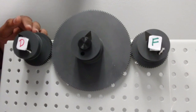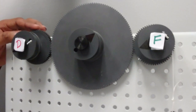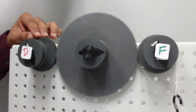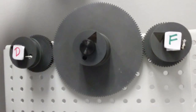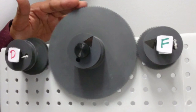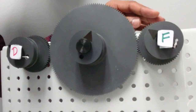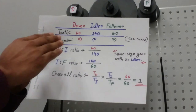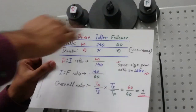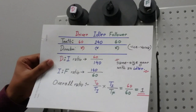If this is our driver and this is our follower, power will be transmitted from the driver toward the follower. One important thing to notice: if the driver rotates counter-clockwise, the follower will also rotate counter-clockwise, but the idler gear in the middle will rotate clockwise. The driver gear has 60 teeth, the idler has 140 teeth, and the follower has 60 teeth.